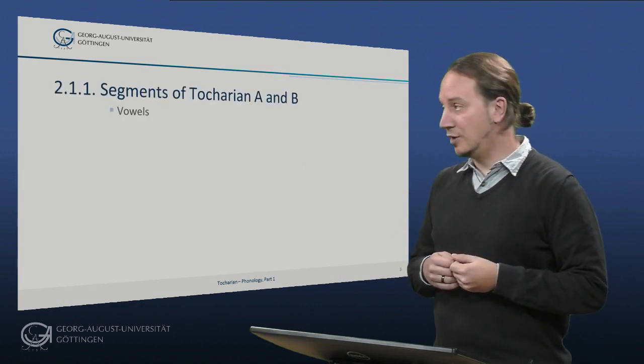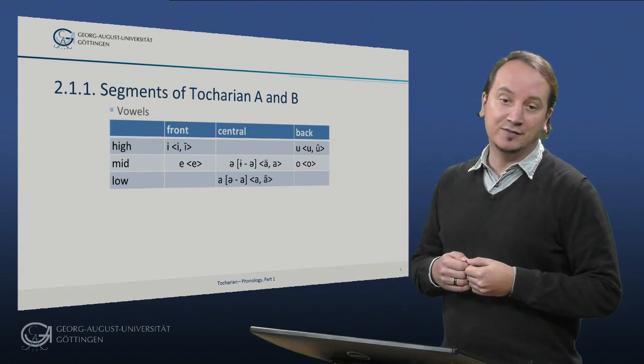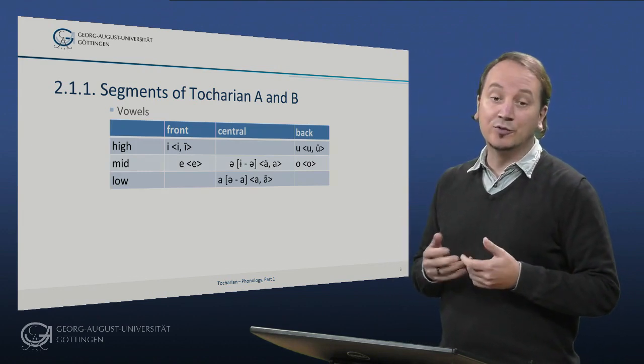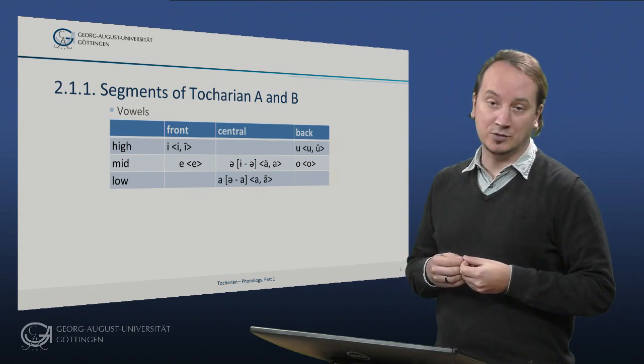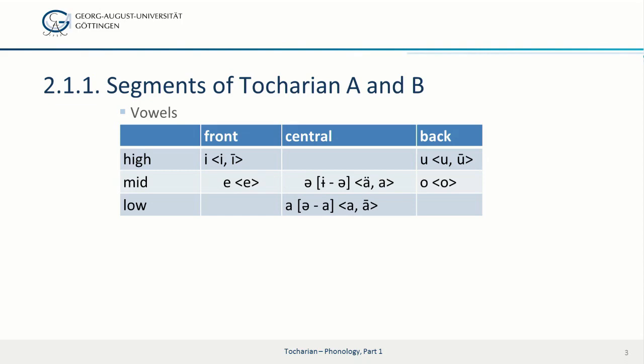So let's take a look at the vowels first. Both Tocharian languages have a five vowel inventory system. There's no phonological contrasting length as you can see. Let's look at the chart more closely. The square brackets here are indicating how the vowel is written in the transcription of Tocharian texts.